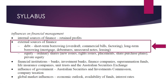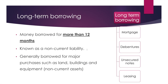When looking at the influences on financial management, we need to observe the external sources of finance. We've already looked at short-term options in the HSC syllabus. Long-term borrowing is borrowing for more than 12 months, and all these different types fall under non-current liabilities on the balance sheet. Businesses use these sources of funds for purchasing major assets like land, buildings, or equipment — all non-current assets — so the non-current liability matches with the non-current assets.